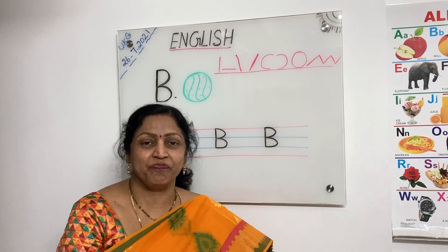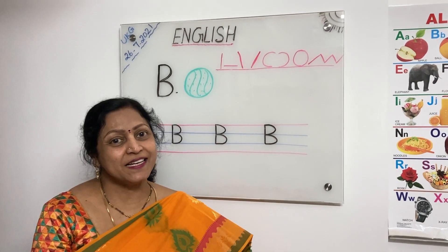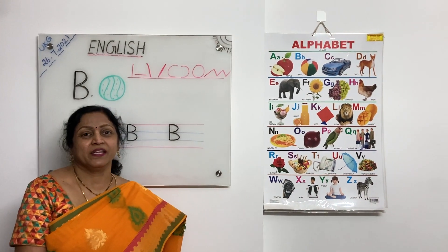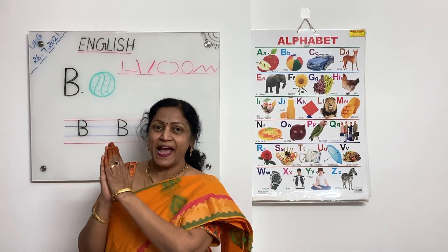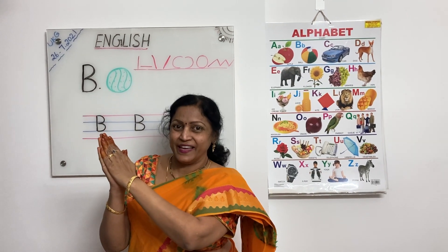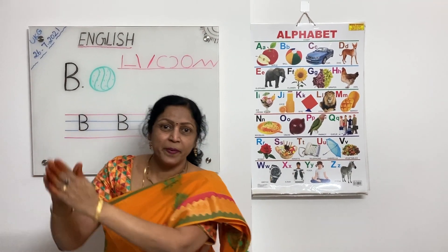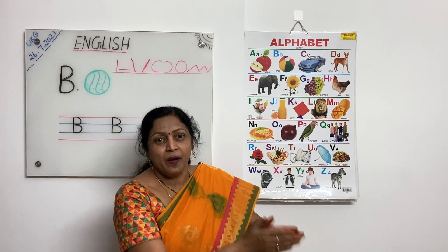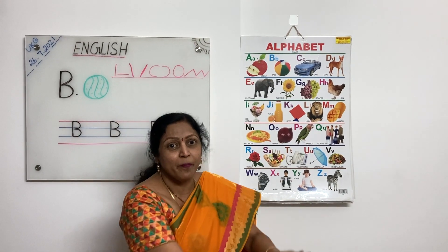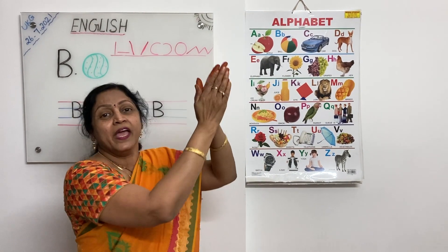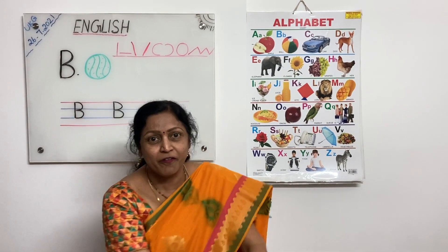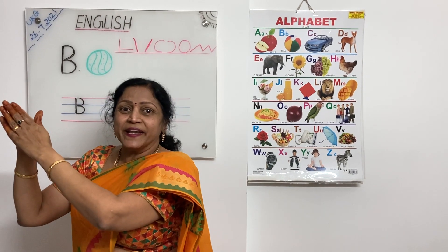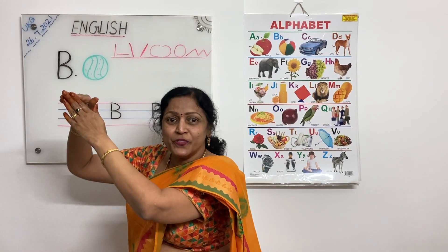What is the sound of B, children? Ba, Ba. Let's sing a small rhyme for the letter B. Keep your hands like a bat. Bring your bat and bring your ball. Bring your bat and bring your ball. Ba, Ba. Bring your bat and bring your ball to the fort to play. Bring your bat and bring your ball. Bring your bat and bring your ball to the fort to play.